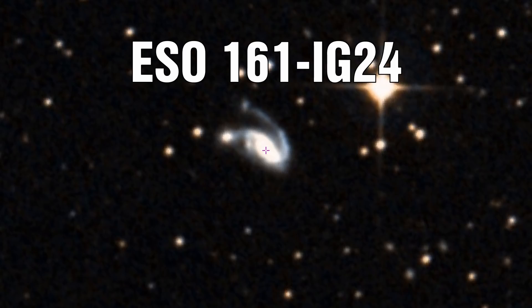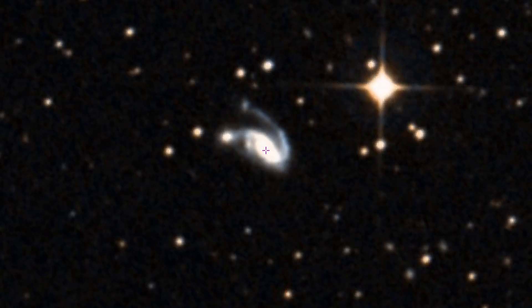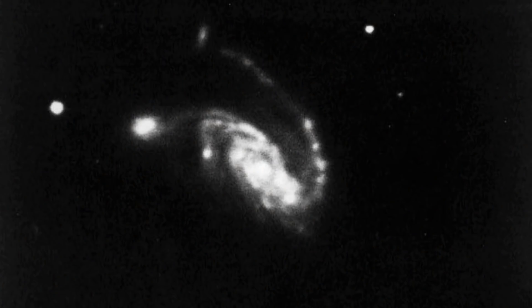ESO 161 IG24 is another fine example. Here is a galaxy with three spiral arms and on the end of each appears a companion galaxy. This galaxy is quite remarkable in that its longest arm has a series of large knots along it which look like the beginnings of new companions.